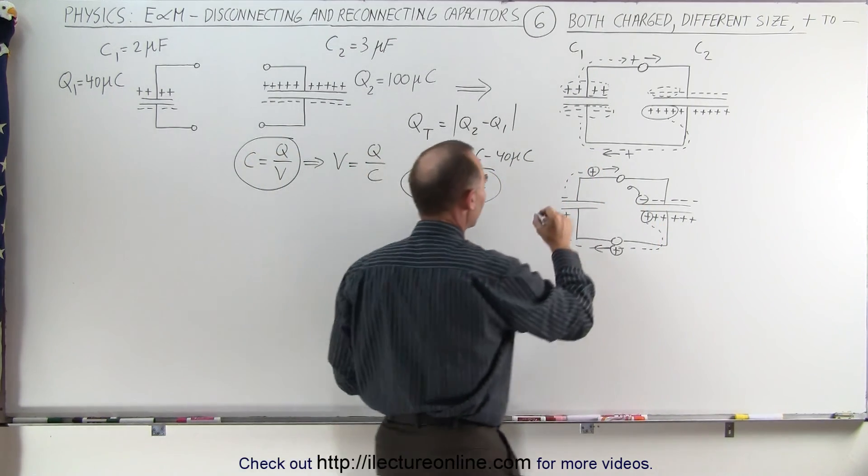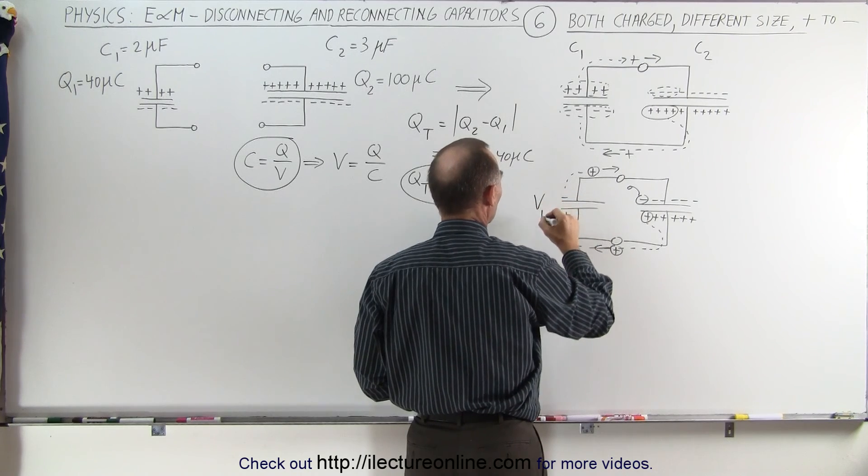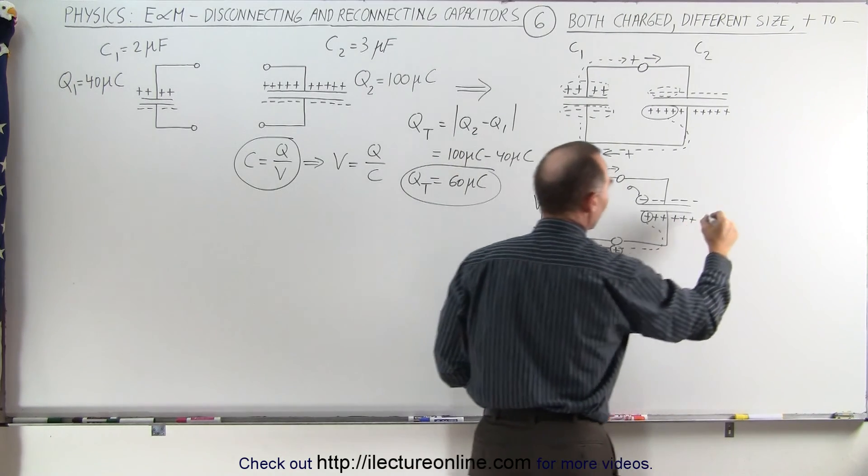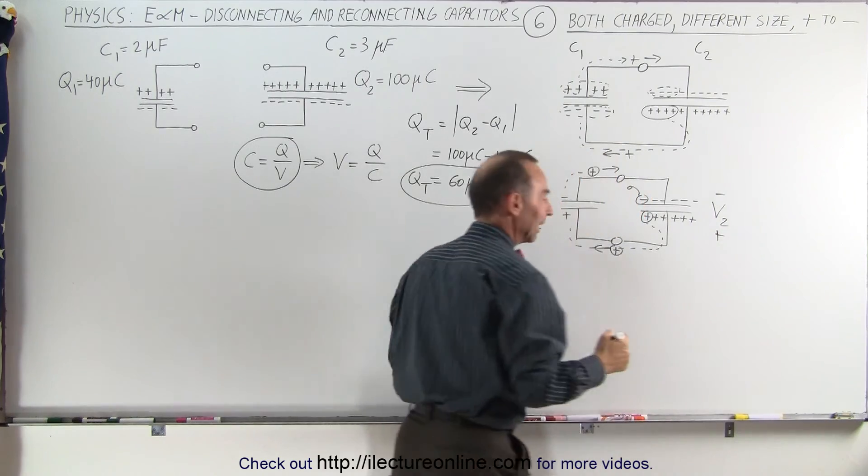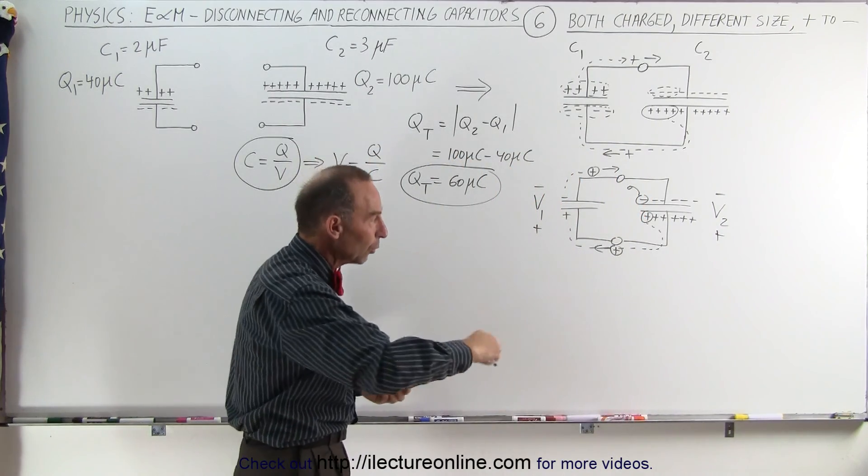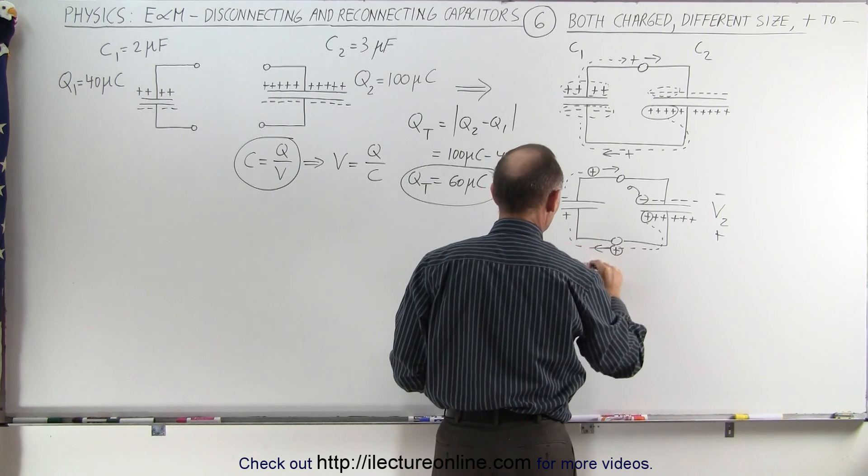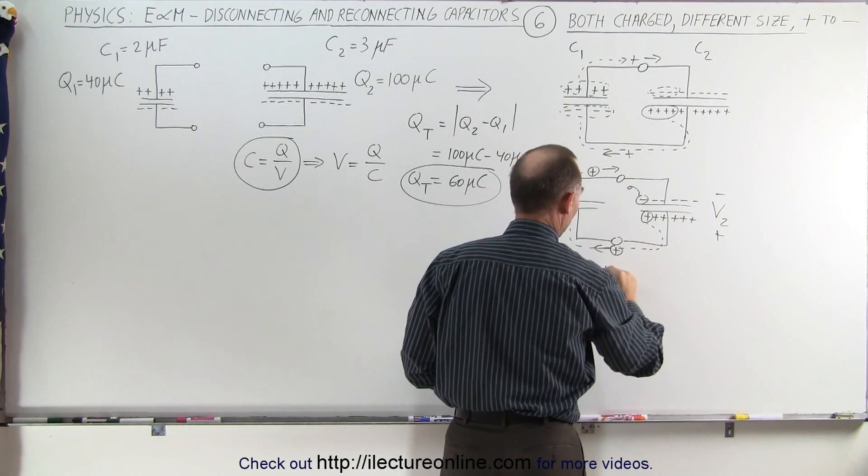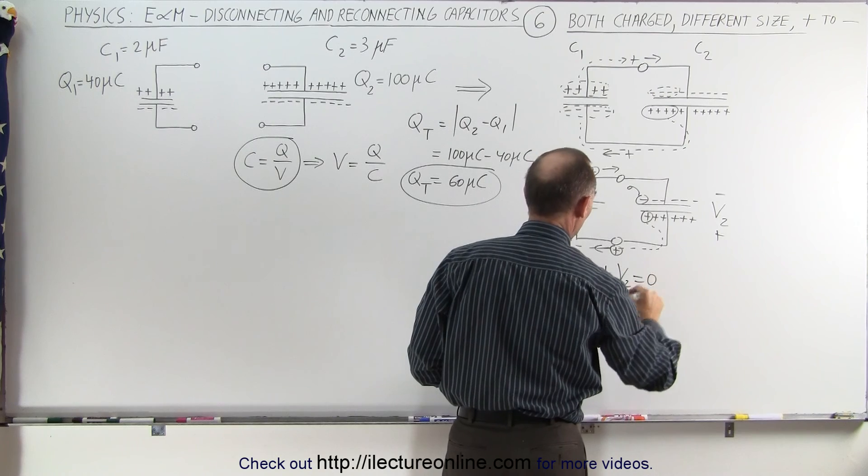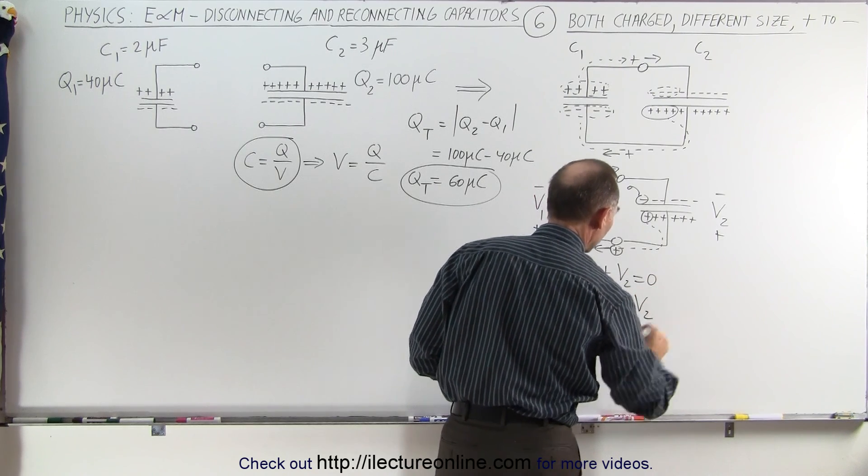That means you're going to have a voltage across this one here, V1, negative and positive, voltage two, negative and positive. And again, using Kirchhoff's rules as we go all the way around the circuit, we know starting from here, minus V1 plus V2 equals zero, or V1 equals V2.